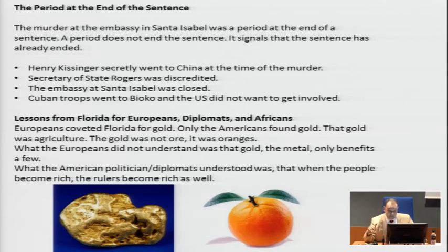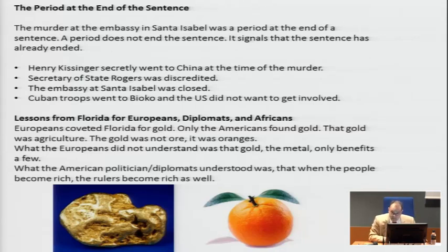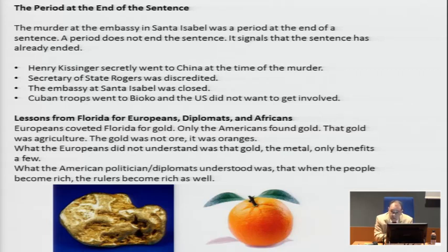There are lessons here. Going back to 1819 when we made the deal with the Spanish — it's not just that this is how President Trump acts and will act in the future, though you should be aware of that. There was also a fundamental difference in how America and Spain looked at things. The Spanish went to Florida for gold. The Americans went for agriculture. The real gold were oranges. America became rich, and the lesson is: when the people become rich, you become rich. I don't think anybody in Europe really understood that.